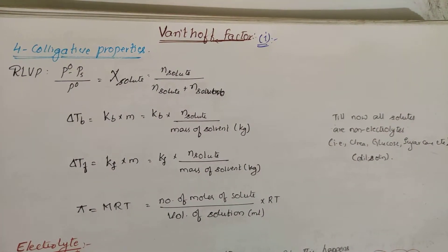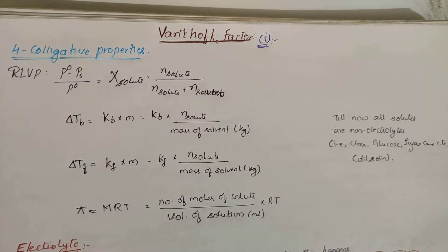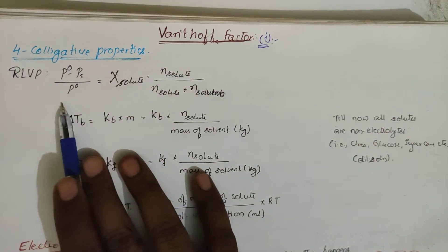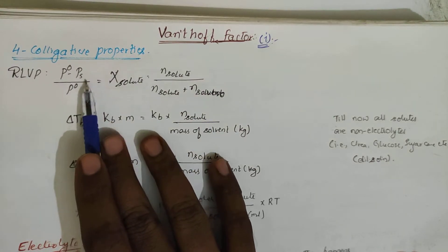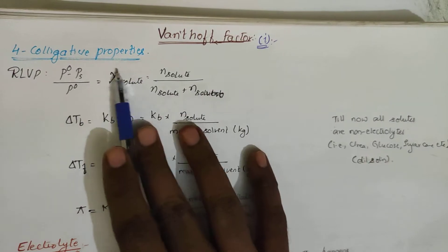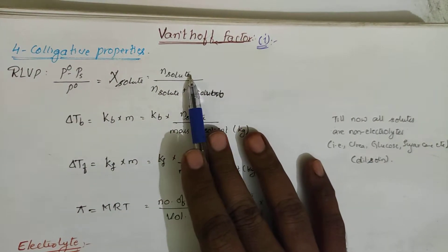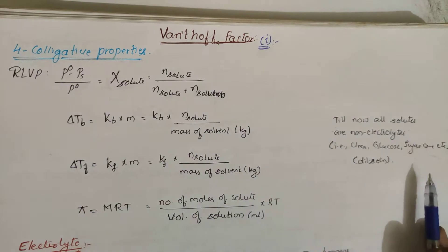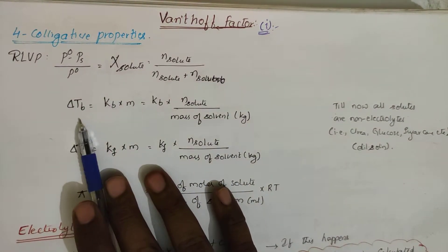Before going into the Van't Hoff factor, let us recall all the colligative properties. We have four types: first is RLVP, relative lowering of vapor pressure, which is (P₀ - Pₛ)/P₀, equal to the mole fraction of the solute. Mole fraction of the solute is number of moles of solute by total moles of solute plus solvent.